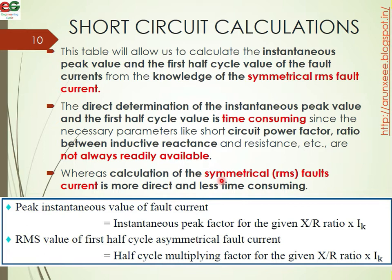The peak instantaneous value of the fault current equals the instantaneous peak factor for the given X/R ratio multiplied by IK. The first half cycle RMS value of the asymmetrical fault current equals the half cycle multiplying factor for the given X/R ratio multiplied by IK.